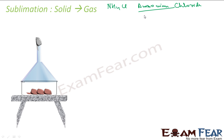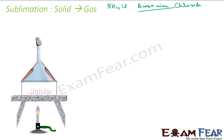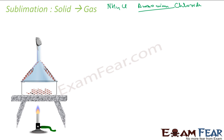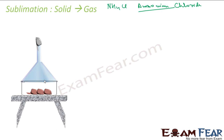Ammonium chloride does not have a liquid state. In the experiment, we take ammonium chloride in a beaker, place an overhead funnel, close it with cotton, and optionally add a filter paper. When we apply a Bunsen burner and heat it, the ammonium chloride converts directly to gas — there is no liquid form. The gas then rises, and since there is less heat higher up, it cools and gets deposited on the funnel.